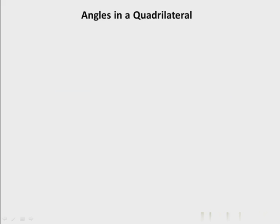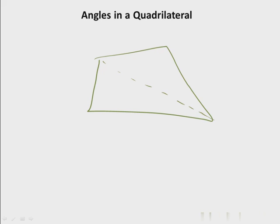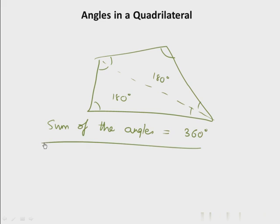A quadrilateral is a four-sided figure, so it has four vertices and four angles. Let's figure out something common to all quadrilaterals. Take a random quadrilateral and divide it by a diagonal into two triangles. The angles of each triangle add up to 180 degrees, so combining both gives the sum of angles of the quadrilateral — that is 360 degrees. This works for any convex quadrilateral: a diagonal divides it into two triangles.